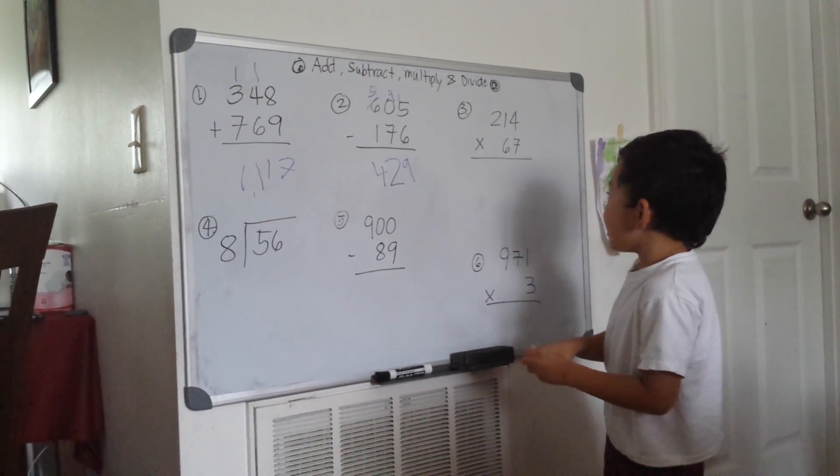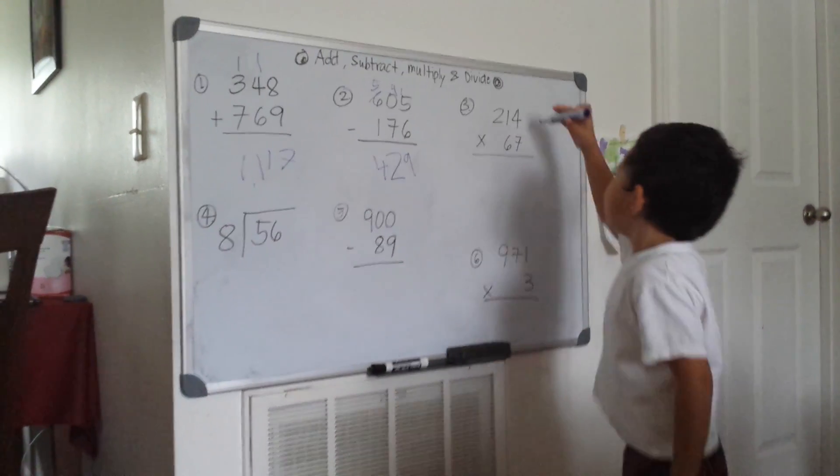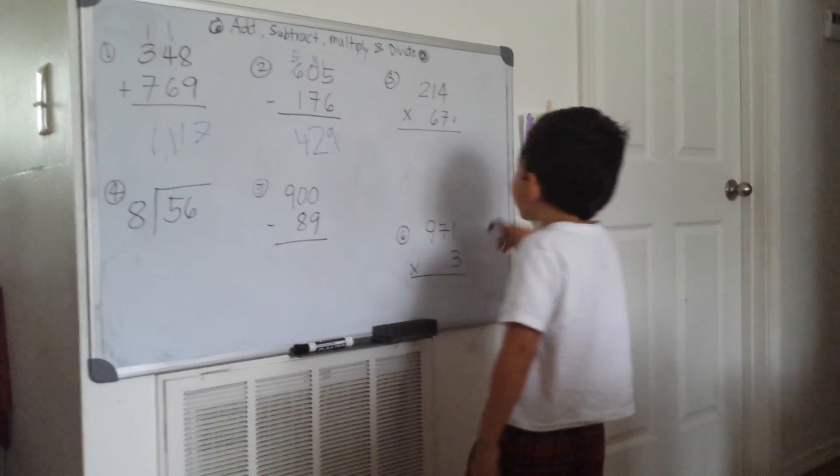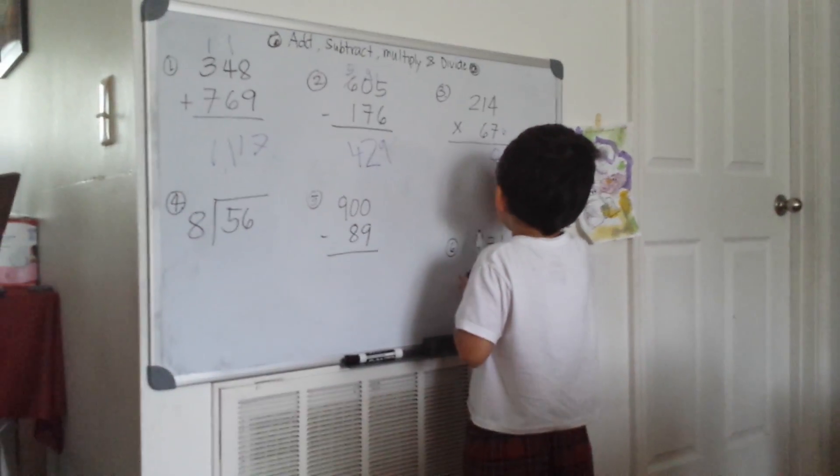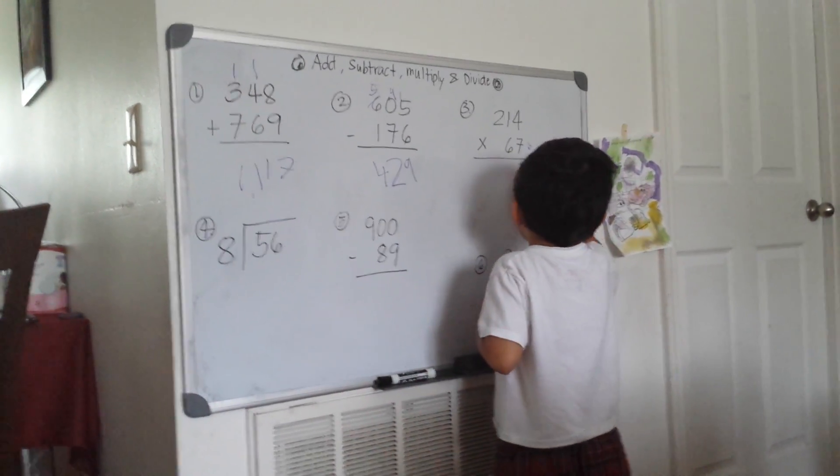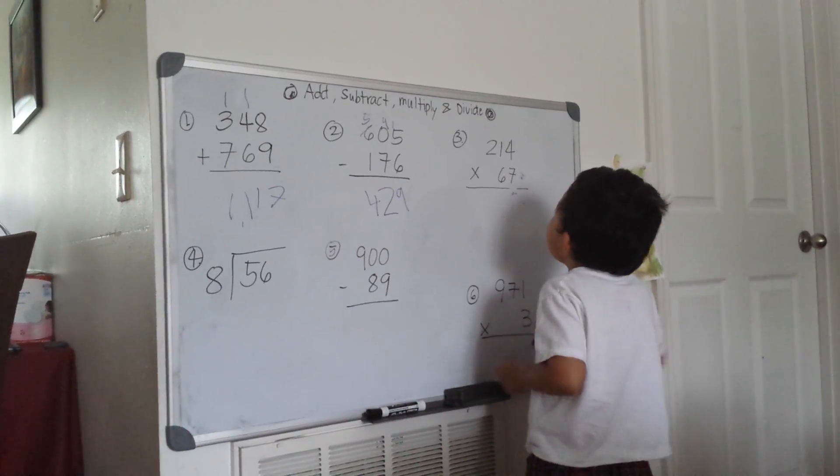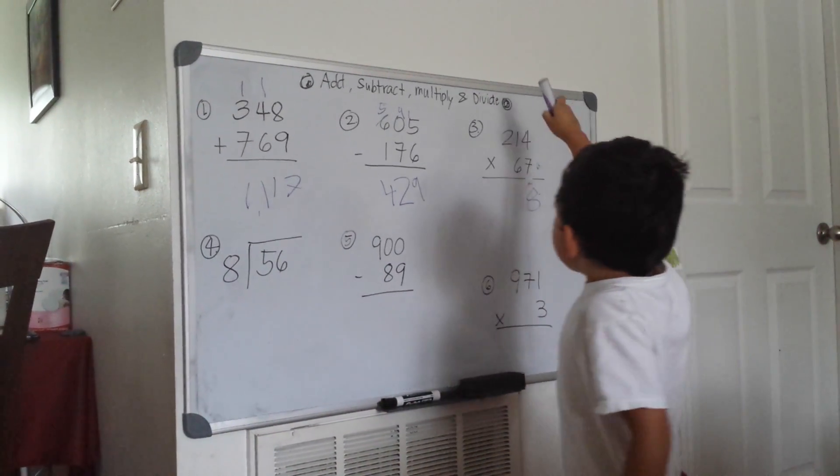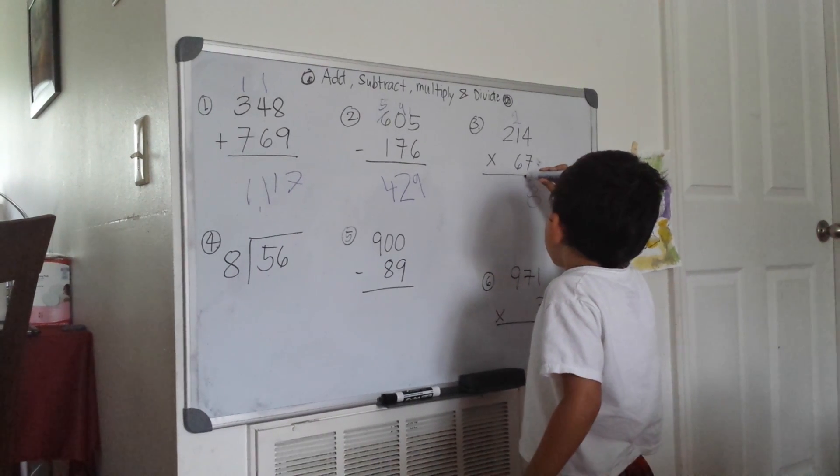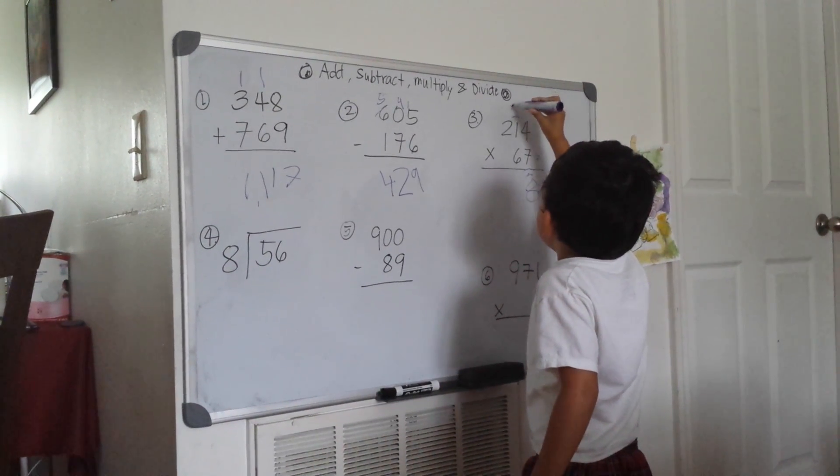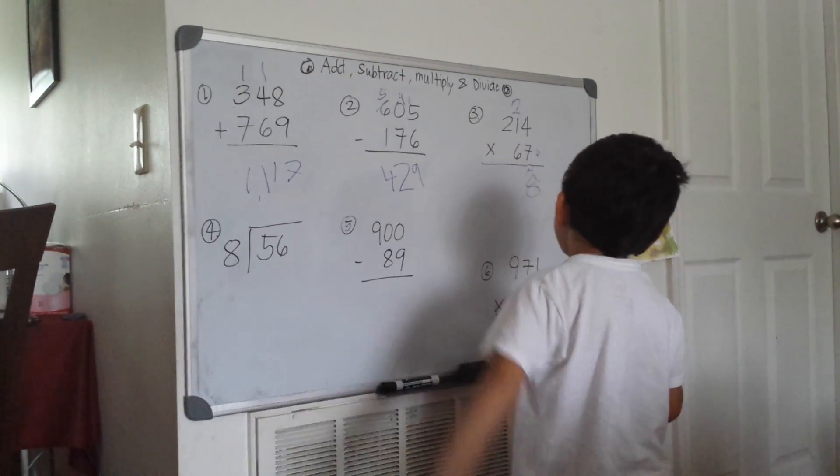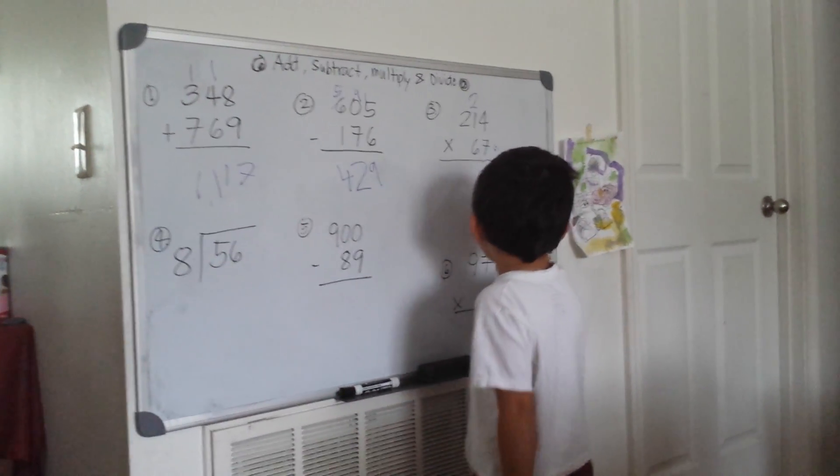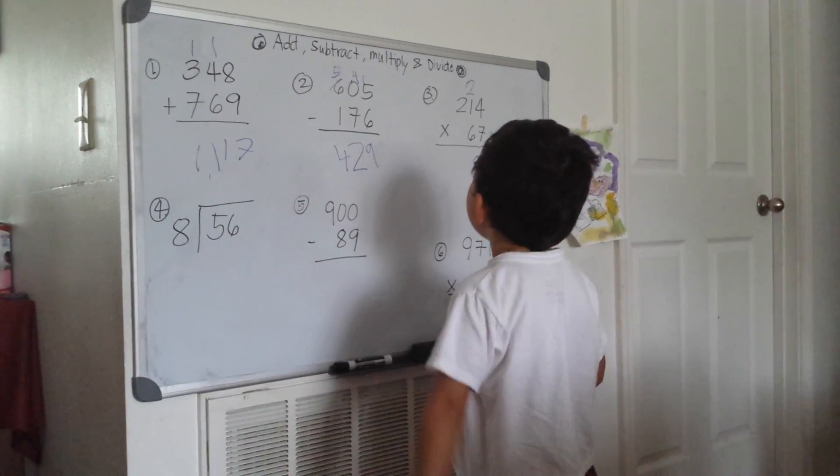214 times 67. Starting with 7 times 4 is 28, carry the 2. 7 times 1 is 7, plus 2 is 9. 7 times 2 is 14, so the first partial product is 1,498.